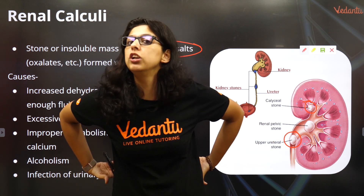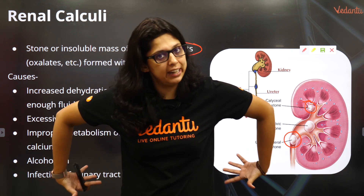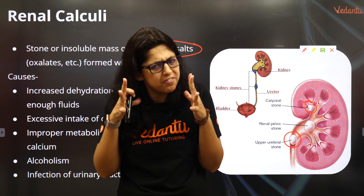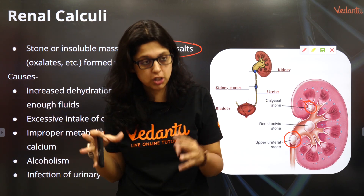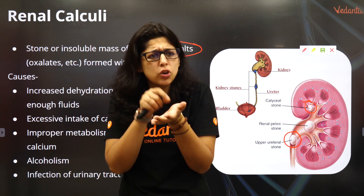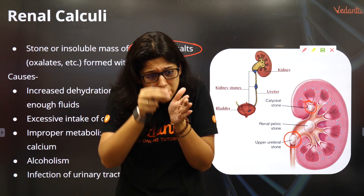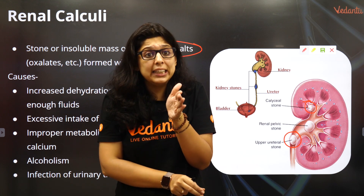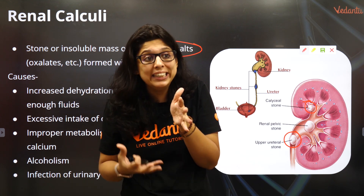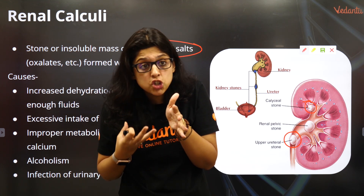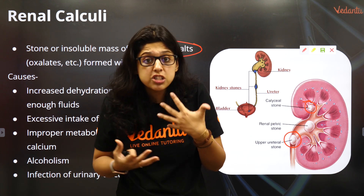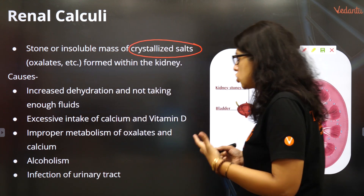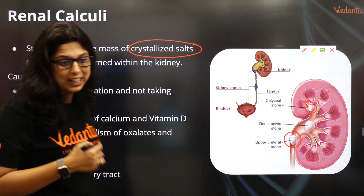That pain doesn't stay in the kidney — it radiates towards the backbone and towards the abdomen. It's a very painful condition; sometimes it causes injury to the entire kidney, and because of that injury there is a lot of bleeding in the kidney.